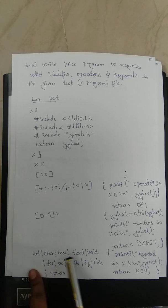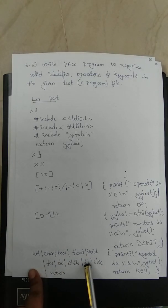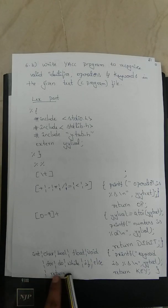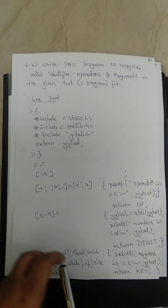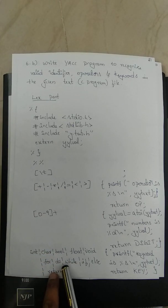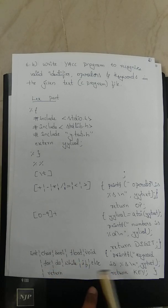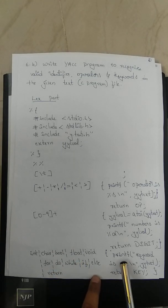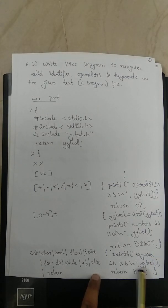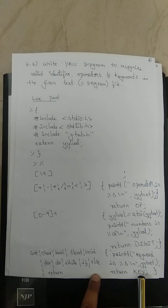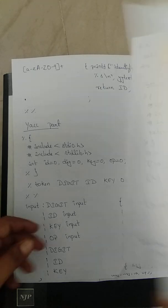Next are keywords. Listed keywords in the regular expression include: int, char, bool, float, void, for, do, while, if, else — you can also include printf and scanf. When a keyword is encountered in the C file, the action is to print it as a keyword. The matched string in yytext is printed, and the KEY token is written to the YACC program.